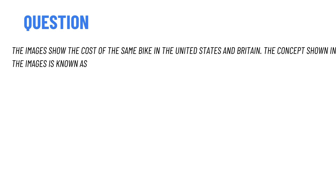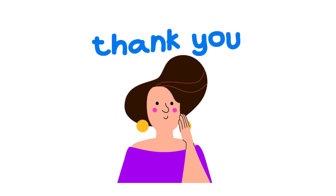Today's question is: the images show the cost of the same bike in the United States and Britain. The concept shown in the image is known as — the correct answer is purchasing power parity.